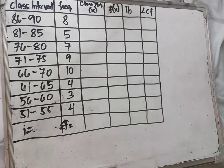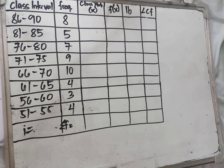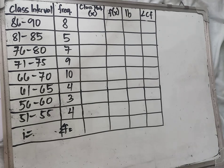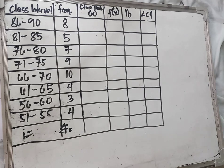Hello everyone, welcome to my channel. Today we will discuss another topic which is the measures of central tendency. There are three types: mean, median, and mode. We will find the mean, median, and mode from grouped data.